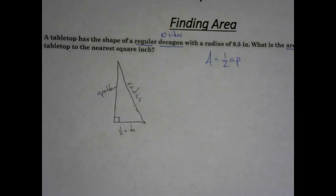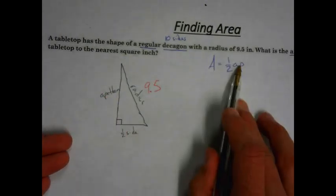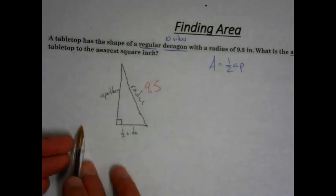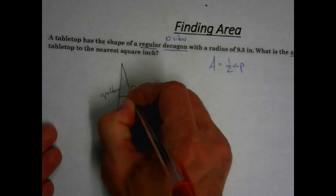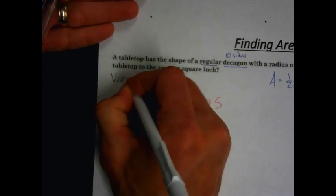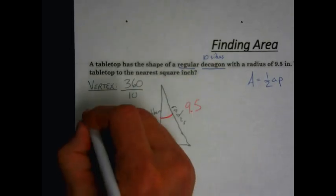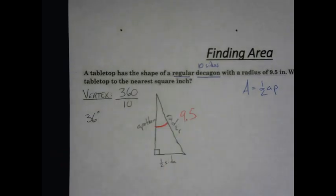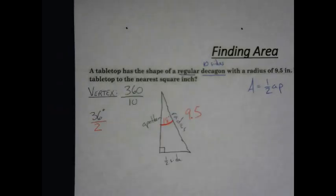The radius is 9.5 inches. We need the apothem and we need the half side to give us the whole side to give us perimeter. The only thing that's missing is our angle. To find the vertex angle, we divide 360 by the number of sides — in this case 10. So the vertex angle is 360 divided by 10, or 36 degrees. The apothem bisects the vertex angle, so the angle in the pop-out triangle is 36 divided by 2, which is 18 degrees.